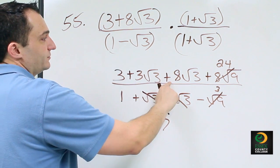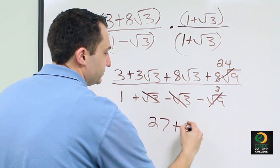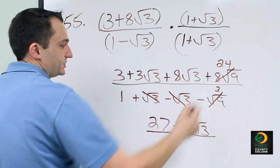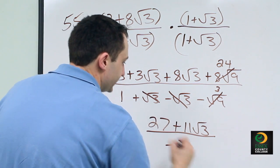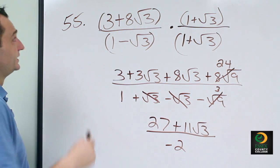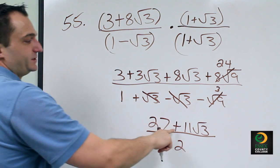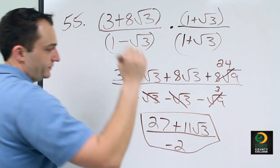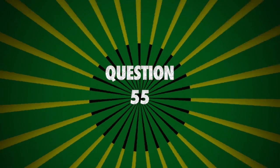And then 3 radical 3 plus 8 radical 3 becomes plus 11 radical 3, over 1 minus 3 is negative 2. So your final answer for number 55 is 27 plus 11 radical 3 over negative 2. Thank you!